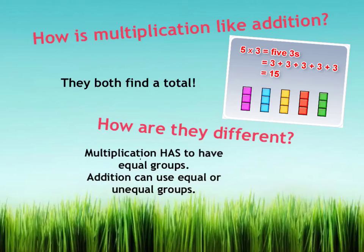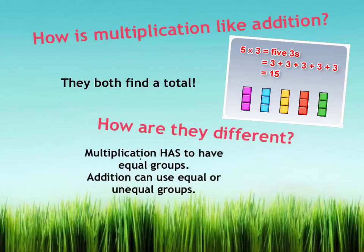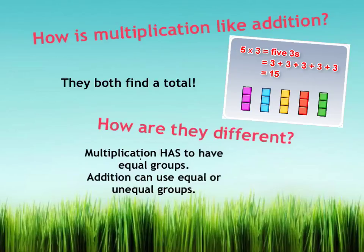Our essential question for the lesson was: how is multiplication like addition? We figured out that they both find a total. We can use repeated addition or multiplication to find how many in all. How are they different? Multiplication has to have equal groups — you can't have multiplication if any of the groups have a different number. Addition, however, can work with equal or unequal groups. Just know that we can use repeated addition or multiplication to add equal groups together and find how many in all.